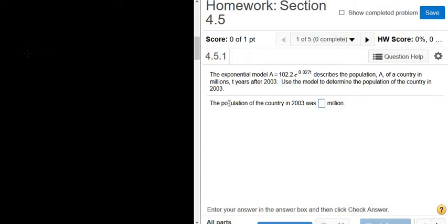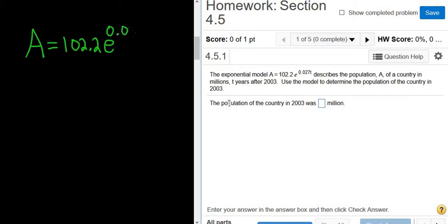The exponential model is given by A equals 102.2 E to the 0.027T, which describes the population A. So this is the population of a country in millions, T years after 2003. Use the model to determine the population of the country in 2003.